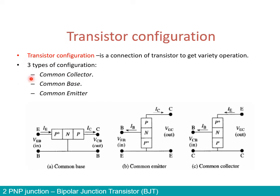Here we have the three types of transistor configuration. Transistor configuration defines the connection of the transistor with its input and output voltages. The three types are: common collector, common base, and common emitter. Let's start with common emitter since it is the form we use the most. Common emitter is when we have the base and emitter connected. We have the small voltage that supplies the current IB — the supply of the small voltage to overcome the bias voltage put between base and emitter is what we call the input.